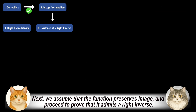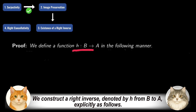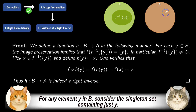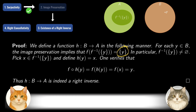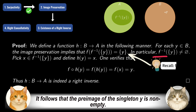Next, we assume that the function preserves images and proceed to prove that it admits a right inverse. We construct a right inverse, denoted h from B to A, explicitly as follows. For any element y in B, consider the singleton set containing just y. By the image preservation property, this set must be equal to the image of its own preimage.